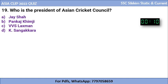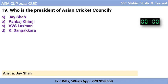Question 19: Who is the president of the Asian Cricket Council? Is it Jaisa, Pankaj Khimji, VVS Laxman, or Kumar Sangakkara? The correct answer is Jaisa. Jaisa is the president of the Asian Cricket Council.